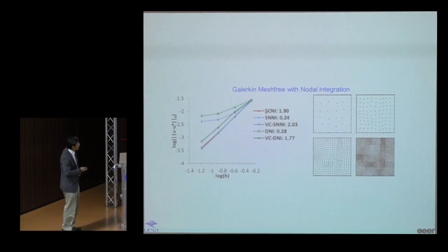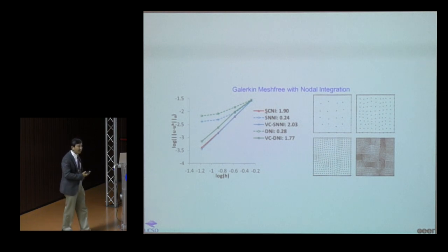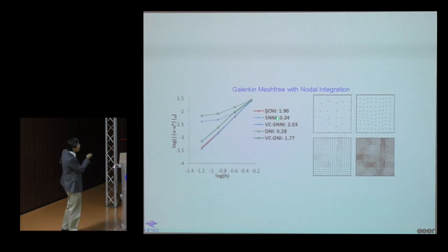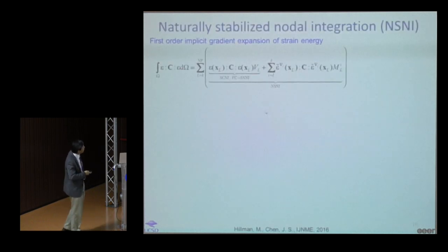Here's a non-uniform refinement example — a more difficult test. The two dashed lines show simple nodal integration and non-conforming SNNI, which have sub-optimal convergence. With the variational consistency correction applied, both recover the solid-line optimal convergence rate of two for linear basis.